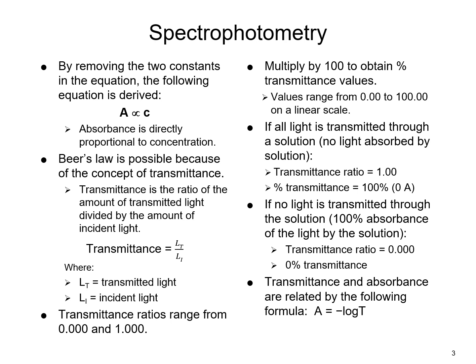We can use that incident light in an equation where the ratio of the amount of transmitted light is divided by the amount of incident light, which is also known as transmittance. Mathematically, transmittance equals the light that is transmitted over the incident light detected on that photodetector. Transmittance ratios range from 0 up to 1.0, and by multiplying by 100, percent transmittance values can be obtained ranging from 0 to 100 on a linear scale.